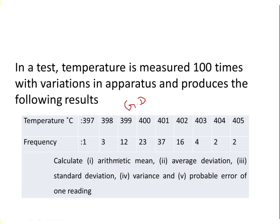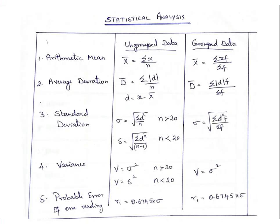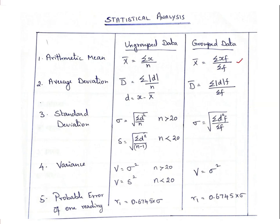For this we are going to find out arithmetic mean, average deviation, and standard deviation. For arithmetic mean, the formula — when we have the frequency of occurrence, this is grouped data — is the summation of x multiplied by frequency of occurrence, divided by summation of f.